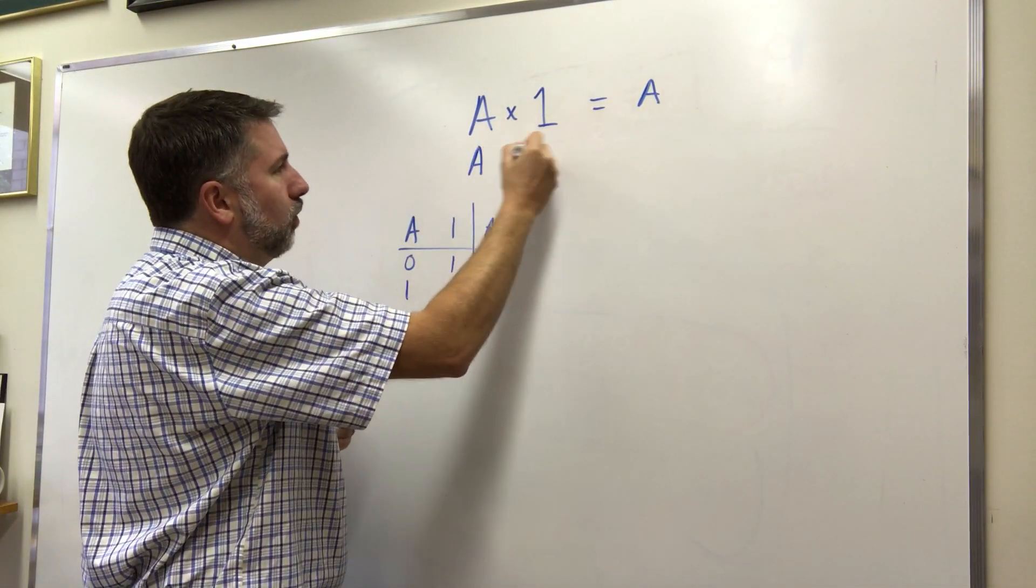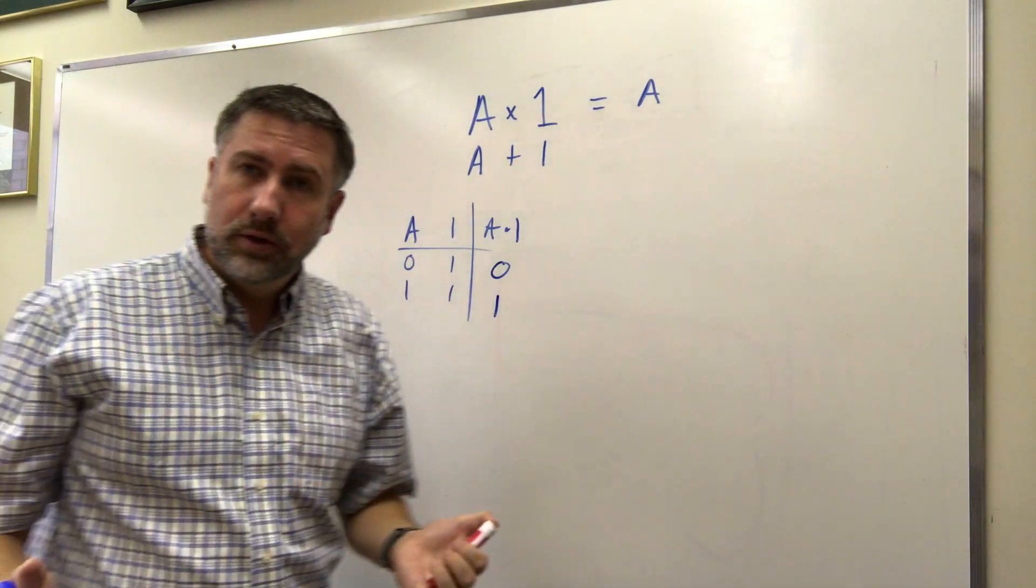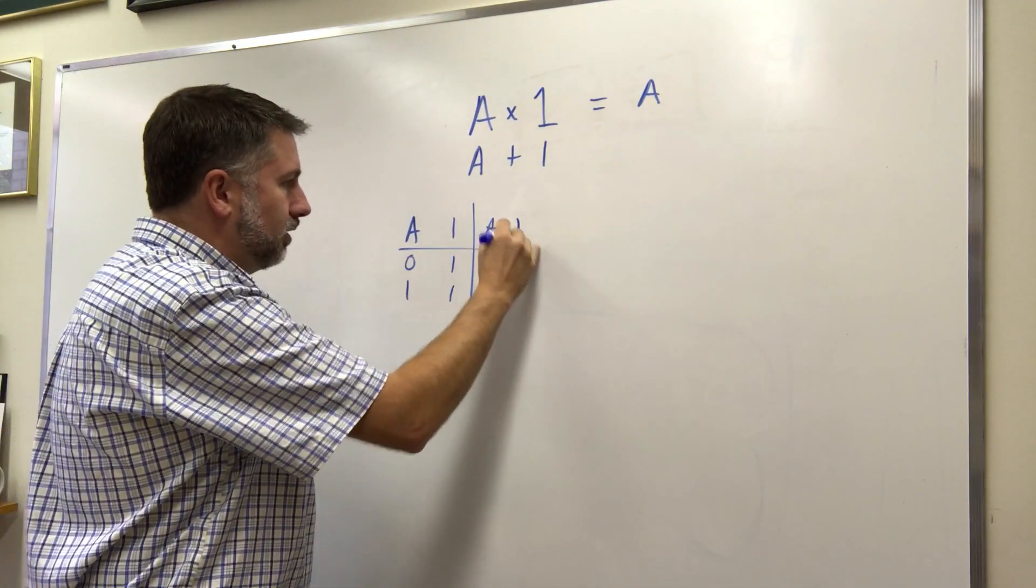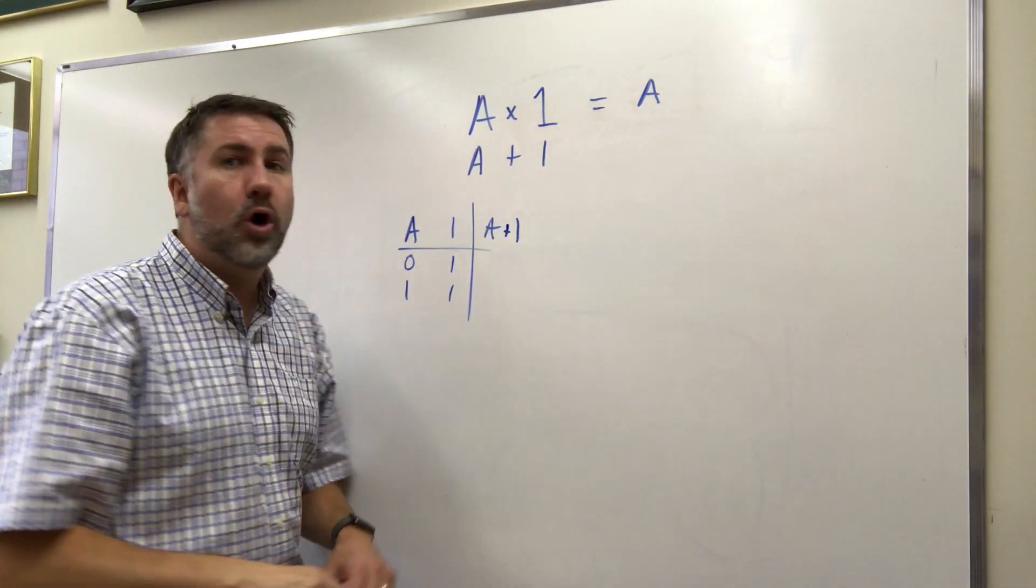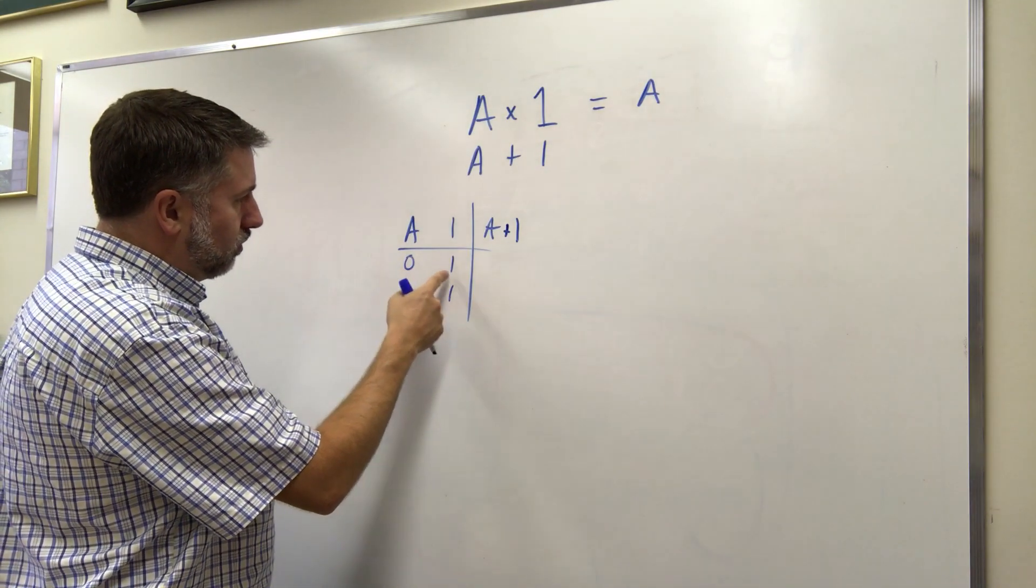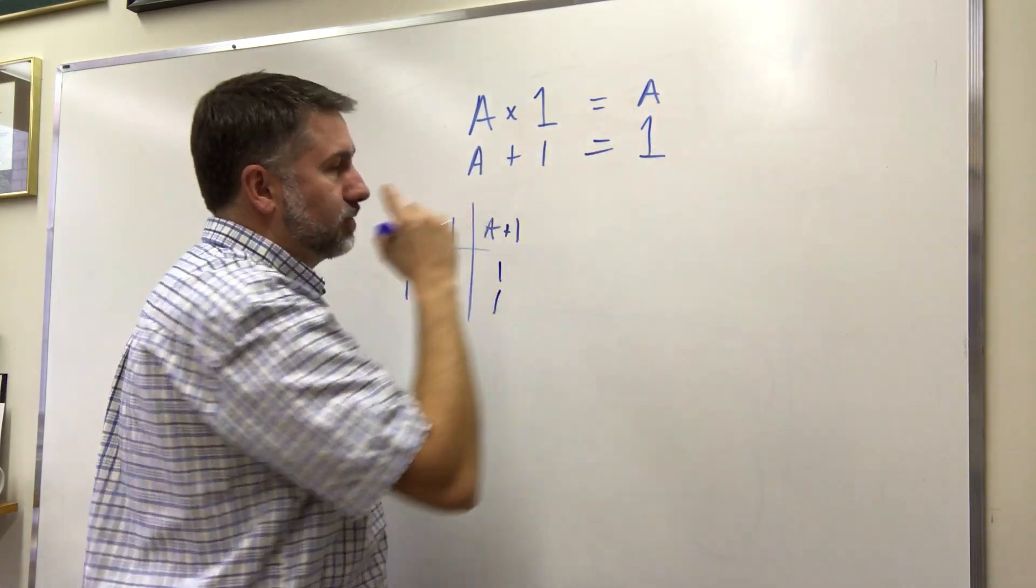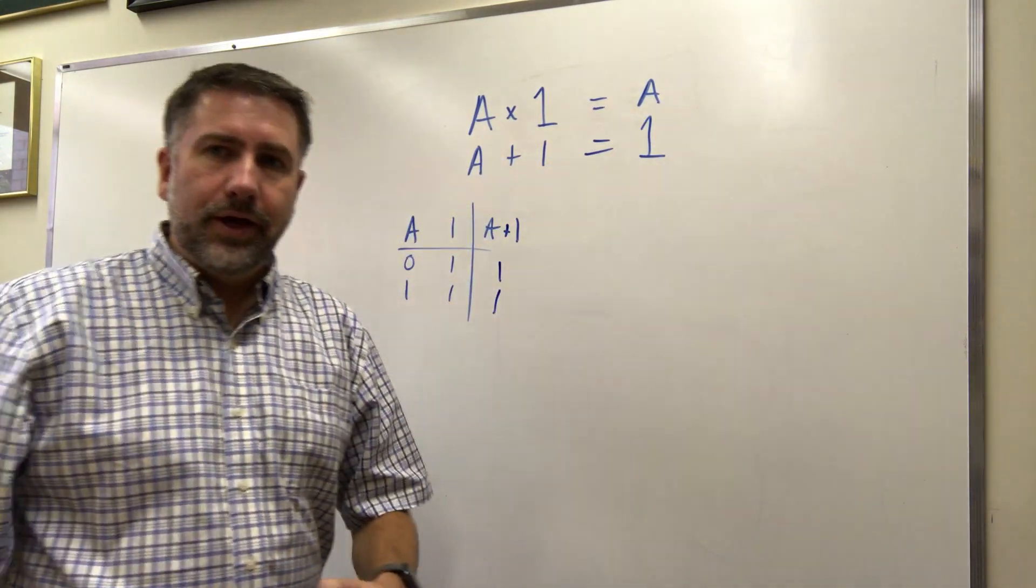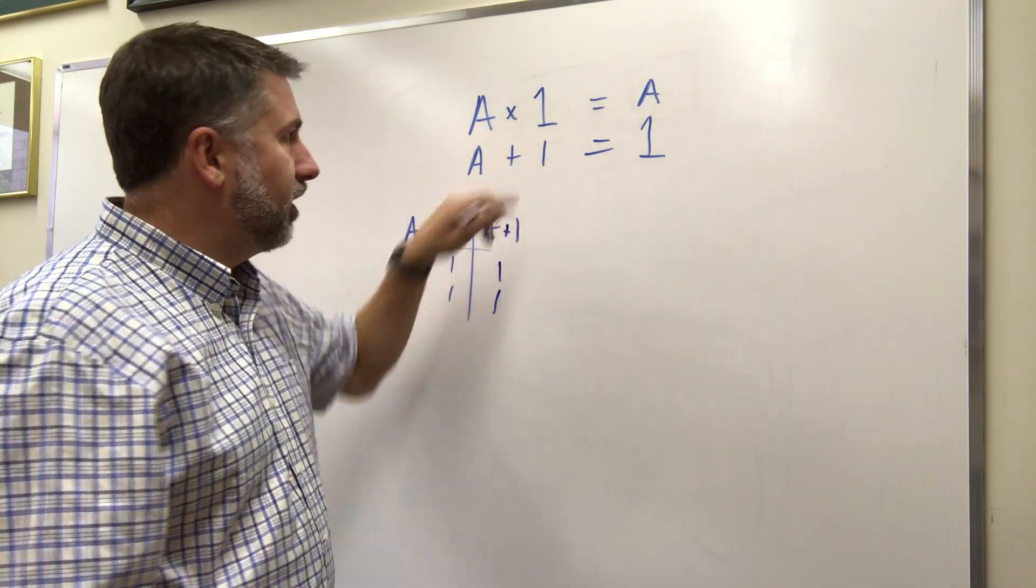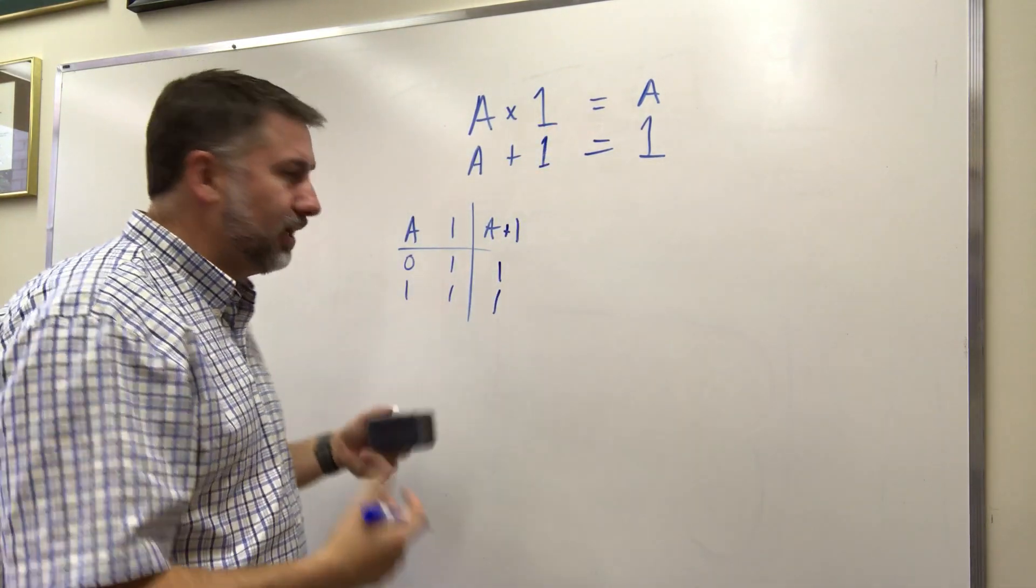What if we add one, A OR one? What happens then? We don't get two. We can't get two. There aren't two. There's only zero and one. So what happens if we OR these two things together? Remember, OR is true if any of them are true. So zero or one is one. One or one is one. Now that's an odd result. If we OR a variable with the number one, we get one. We get rid of that information. The A goes away. We've lost that information.